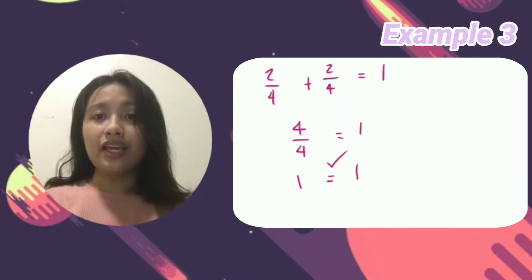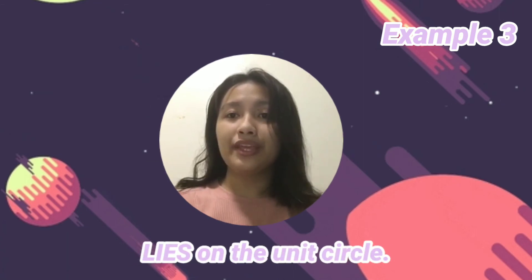As you can see, the sum is equal to 1. Therefore, this point lies on the unit circle. That is all for example three. Let's now proceed to example 4.